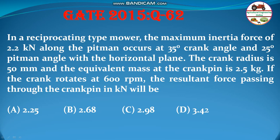The question says: in a reciprocating type mower, the maximum inertia force of 2.2 kN along the pitman occurs at 35 degree crank angle and 25 degree pitman angle with the horizontal plane. The crank radius is 50 mm and the equivalent mass at the crank pin is 2.5 kg. If the crank rotates at 600 rpm, the resistance force passing through the crank pin in kilonewton will be: 2.25, 2.68, 2.98, or 3.42.